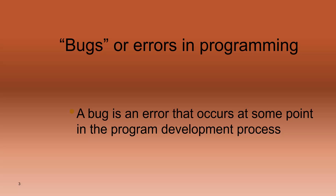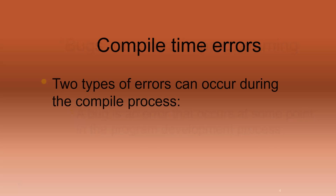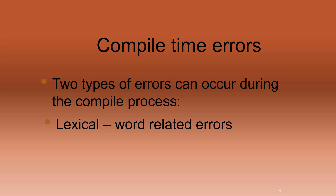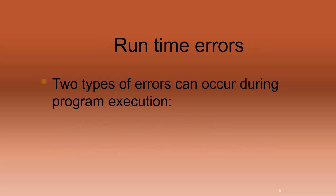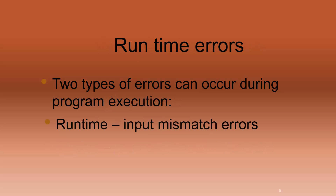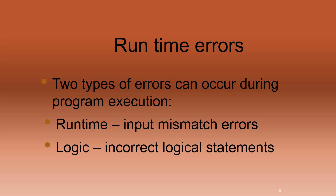Generally speaking, there are four types of errors that can happen in the programming process. At compile time, the two types that happen are lexical and syntax. Once these are fixed and the program runs, there are still two other types of errors that can make your life miserable: runtime and logic.